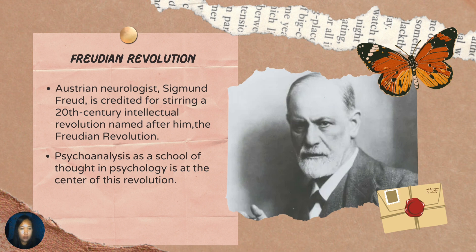Next is the Freudian Revolution. Austrian neurologist Sigmund Freud is credited for steering a 20th century intellectual revolution named after him — the Freudian Revolution. Psychoanalysis as a school of thought and psychology is at the center of this revolution. The psychoanalytic theory of Sigmund Freud explains human behavior in terms of the interaction of various components of personality.